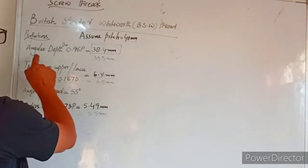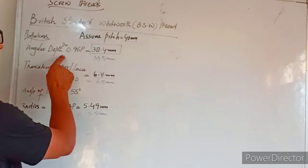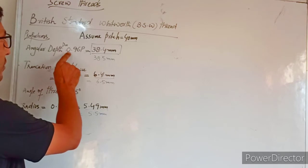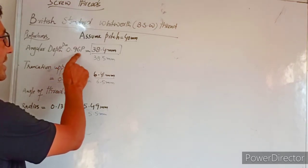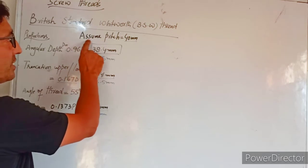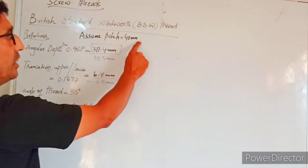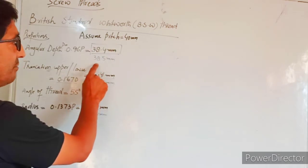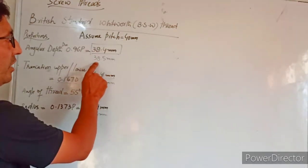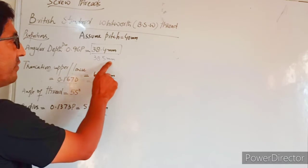The most important proportion that we have to remember is the angular depth of a thread. The angular depth of a thread is 0.96p, and p is the pitch of the thread, which we assume is equal to 40mm. So that comes out to 38.4, and we round up the figure to 38.5mm.